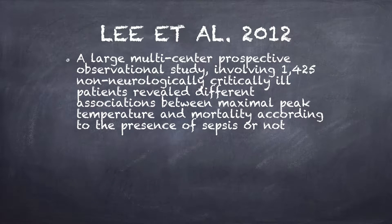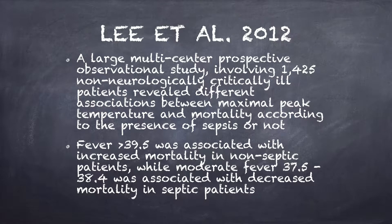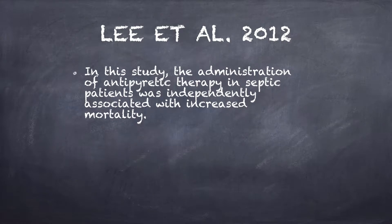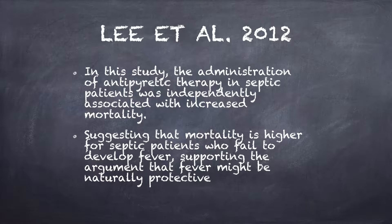Lee et al. in 2012 did a large multicenter prospective observational study involving over 1,400 non-neurologically critically ill patients, which revealed different associations between maximal peak temperature and mortality according to the presence of sepsis or not. Fever above 39.5 was associated with increased mortality in non-septic patients, while moderate fever between 37.5 to 38.4 was associated with decreased mortality in septic patients. The administration of antipyretic therapy in septic patients was independently associated with increased mortality, suggesting that mortality is higher for septic patients who failed to develop fever — supporting the argument that fever might be naturally protective.